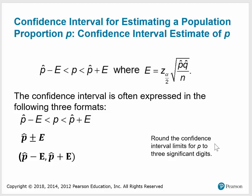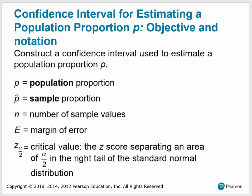Round the confidence interval limits for P to three significant digits. The symbols used in the interval: P is the population proportion, P-hat is the sample proportion, N is the number of sample values, E is the margin of error, and Z sub alpha over 2 is the critical value — the Z score separating an area of alpha over 2 in the right tail of the standard normal distribution.